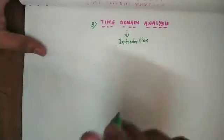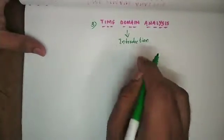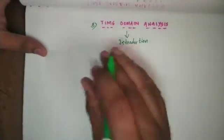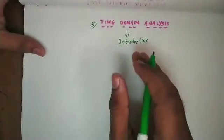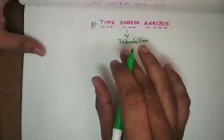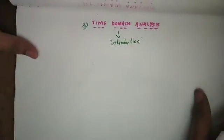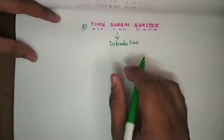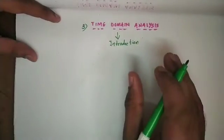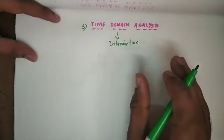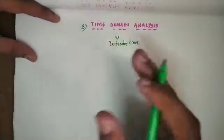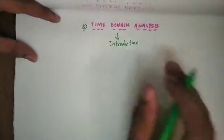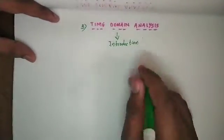First of all, Time Domain Analysis is very important. Let's revise a little bit. What is the control system? We will talk about it. A control system is: when it is given a desired input, it should give us the desired output.